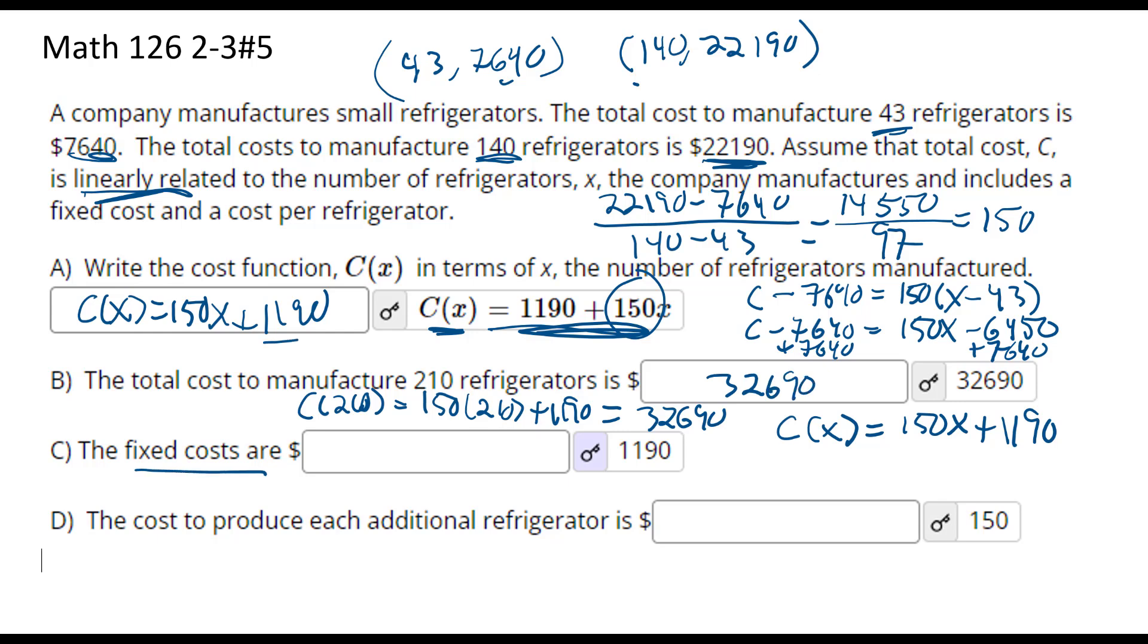What are the fixed costs? That's just going to be our Y-intercept, 1190. What's the cost to produce each additional refrigerator? That's going to be our slope, 150. I hope that makes sense.